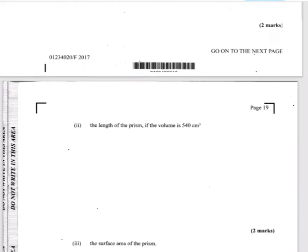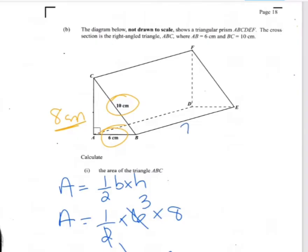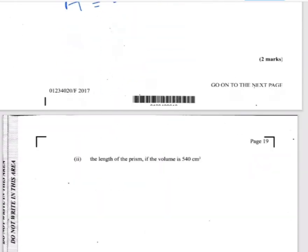The next part of the question says: calculate the length of the prism if the volume is 540 centimetre cubed. So they're asking us to calculate the length, and they've told us that the volume is 540 centimetre cubed.